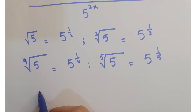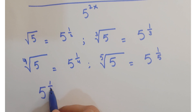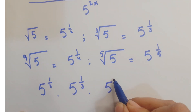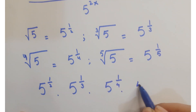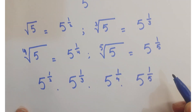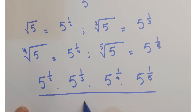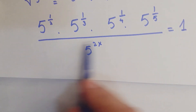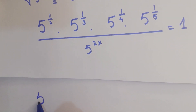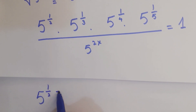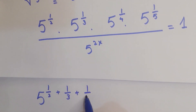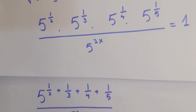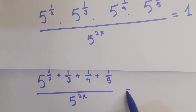Replacing these in the equation, we have 5 to the power 1/2 into 5 to the power 1/3 into 5 to the power 1/4 into 5 to the power 1/5, upon 5 to the power 2x, is equals to 1. Here we see that the bases are same, so we just add up the powers — that is 5 to the power (1/2 + 1/3 + 1/4 + 1/5), upon 5 to the power 2x, is equals to 1.